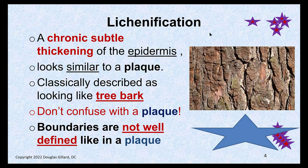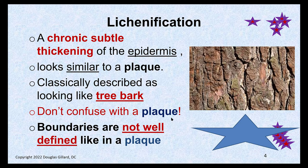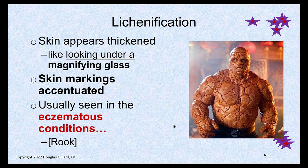Next one is important: lichenification. If you look at the skin with a magnifying glass, the pattern of your skin — the cobblestone appearance — is greatly accentuated with this. It looks a little like tree bark. Don't confuse this with a plaque. Lichenification is a raised lesion, and a plaque is a raised lesion as well. But a plaque has very well-defined borders, while lichenification does not.